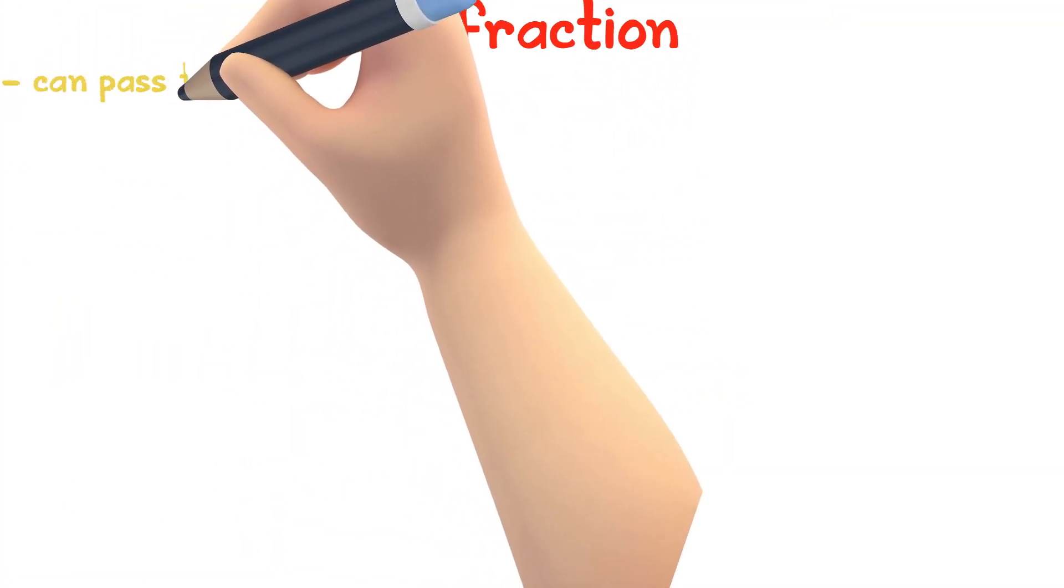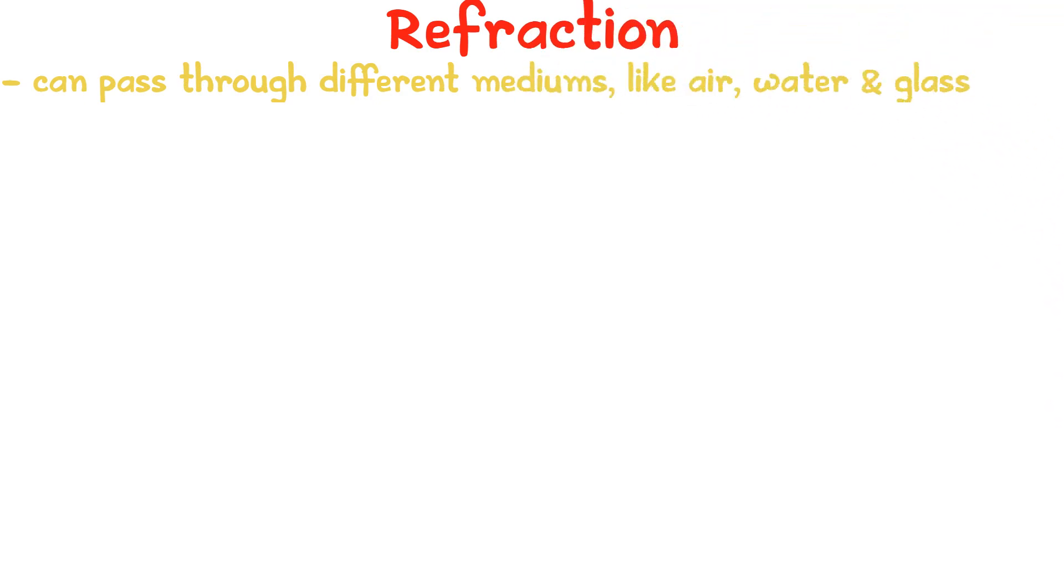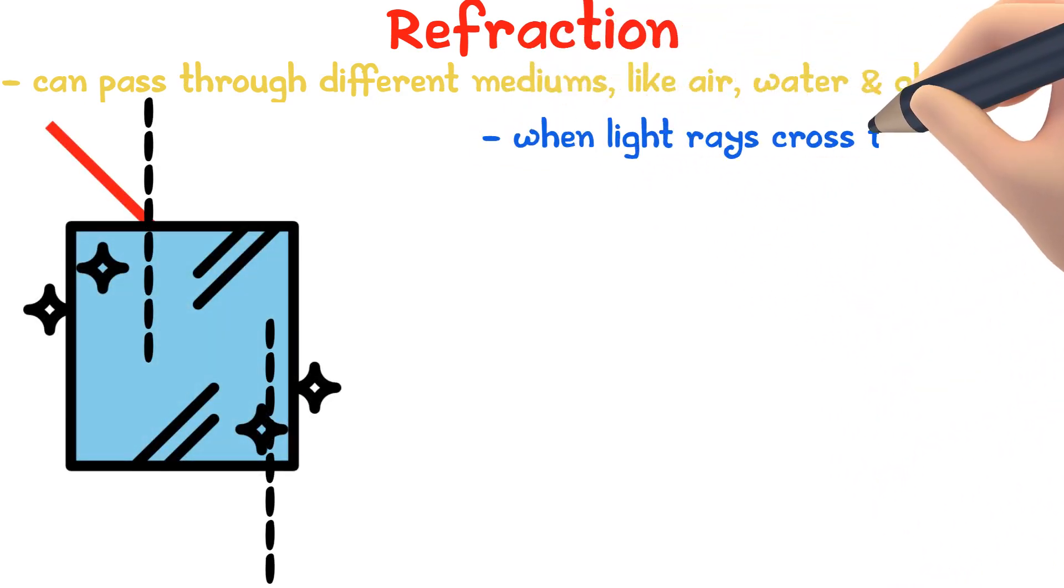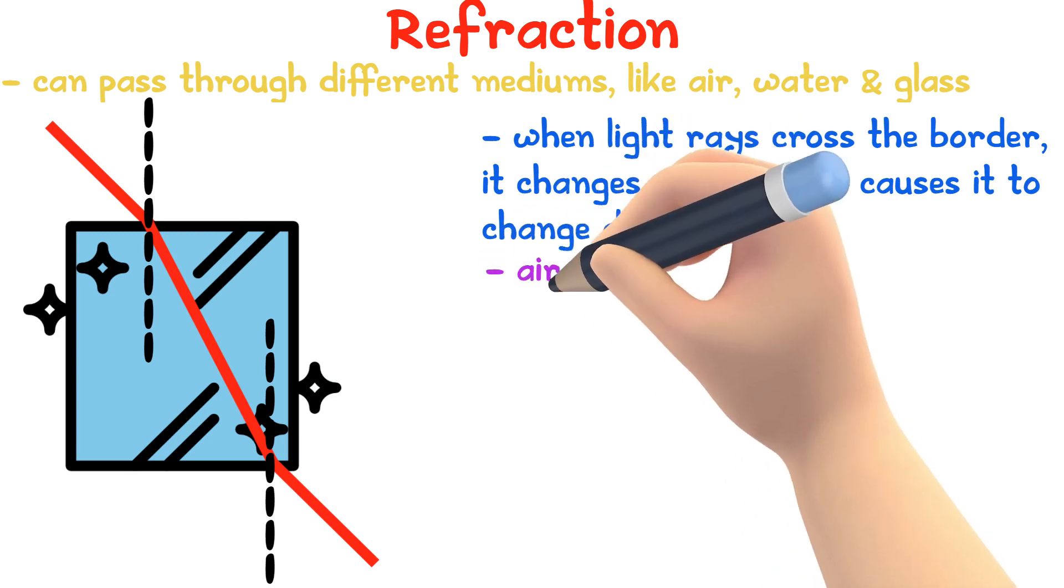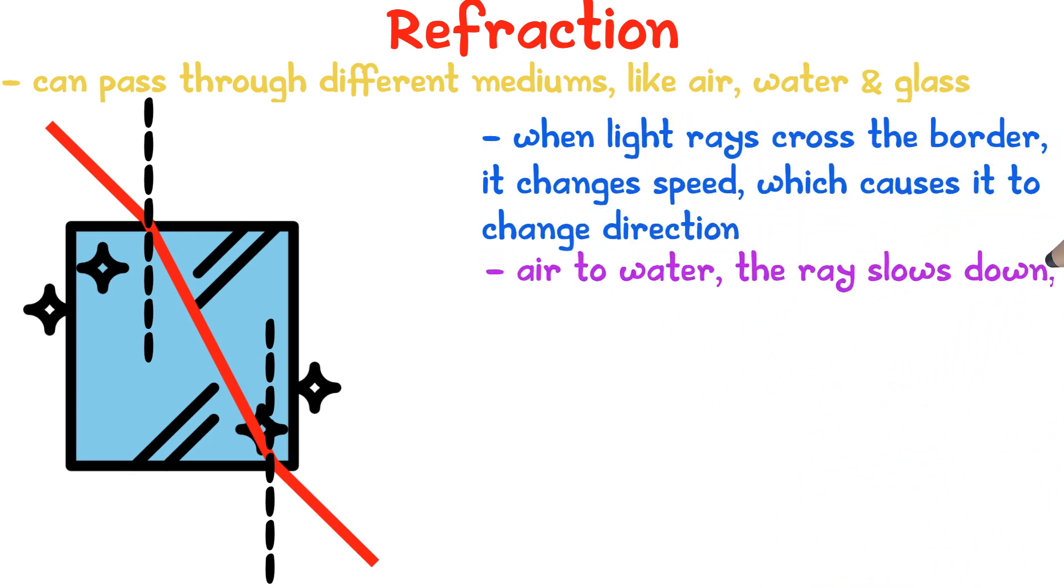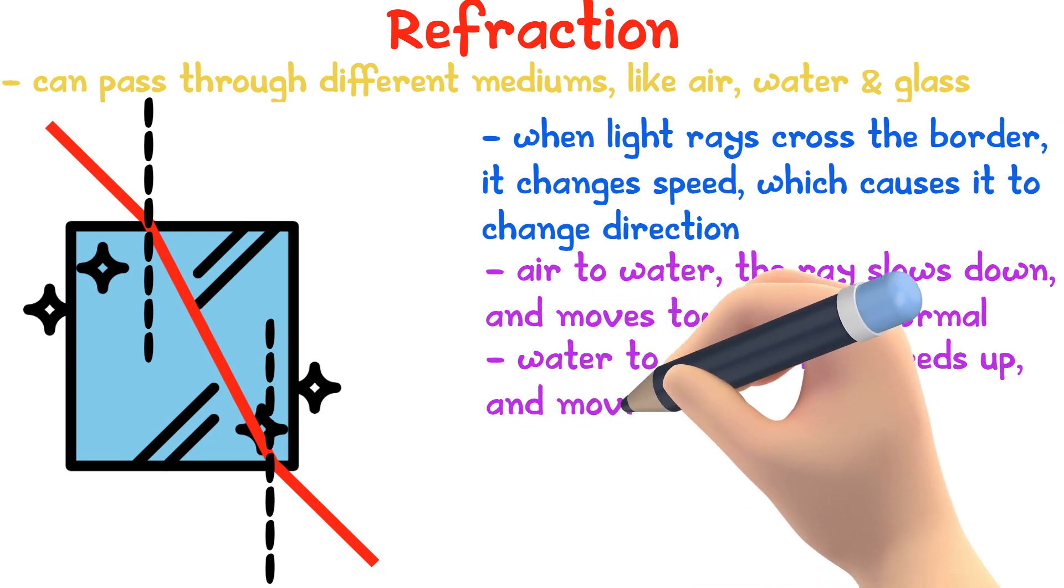Light rays can travel through different media like air, water and glass. When light rays cross the border between two mediums, it changes speed, which causes a change in the light ray's direction. This change of direction is called refraction. When a ray travels from the air into water, it slows down and moves towards the normal. And when the ray travels from water, it speeds up and moves away from the normal.